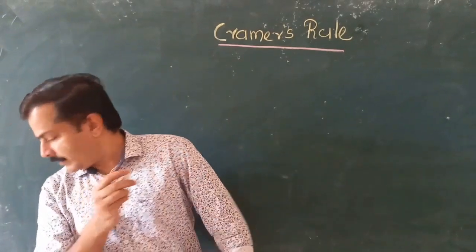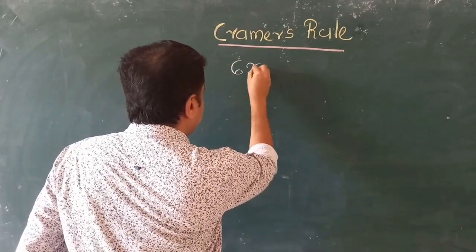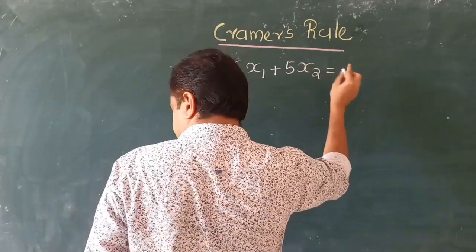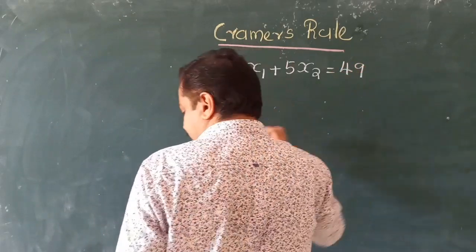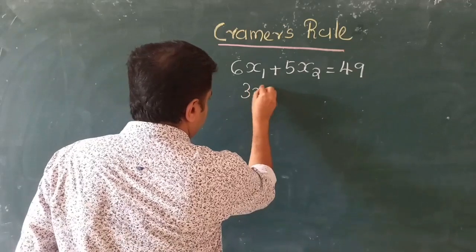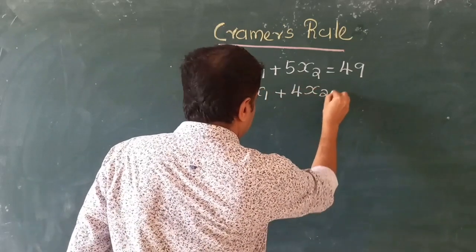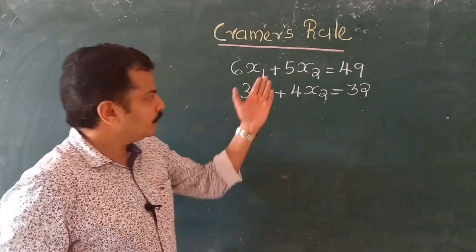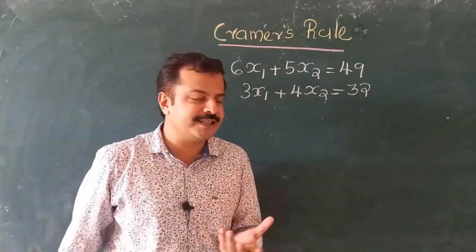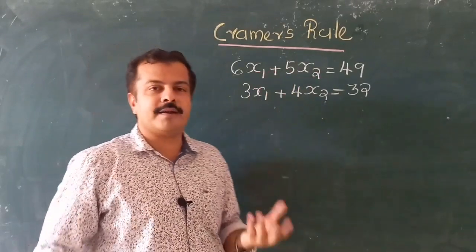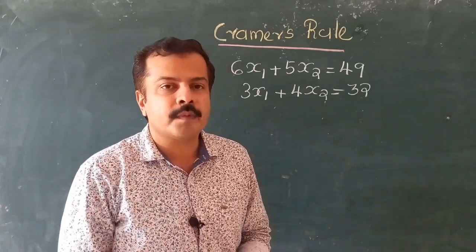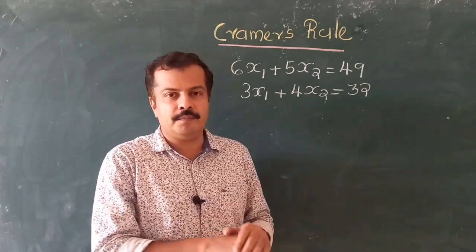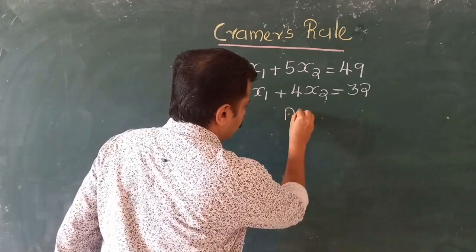Let me present this example: I have two linear equations — 6x1 plus 5x2 equals 49, and the second equation is 3x1 plus 4x2 equals 32. A linear equation means the power of x is 1, and you can represent it as a straight line. This linear equation can be converted into matrix form using the method Ax equals b.